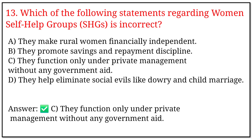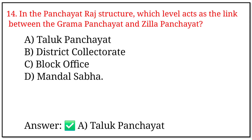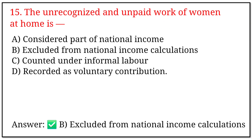13. Which of the following statements regarding women self-help groups (SHGs) is incorrect? Options a, b, c, and d. The correct option is c: they function only under private management without any government aid. 14. In the Panchayat Raj structure, which level acts as the link between the Gram Panchayat and Zila Panchayat? The correct option is a: Taluka Panchayat. 15. The unrecognized and unpaid work done by women at home is — options a, b, c, and d. The correct option is b: excluded from national income calculations.